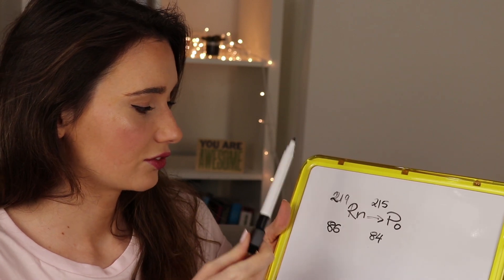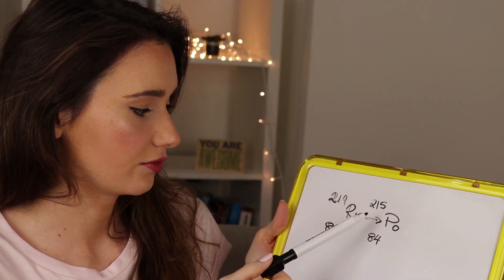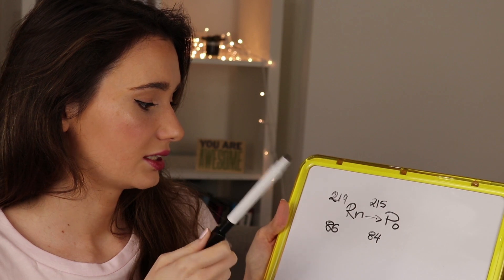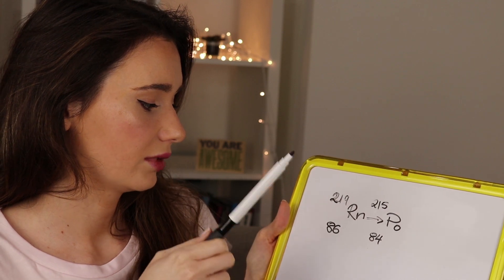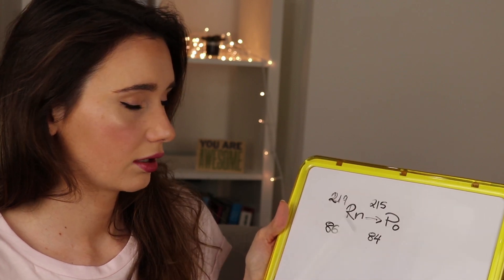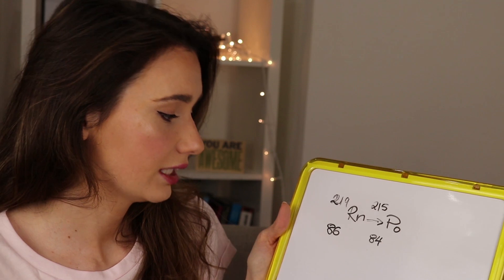Because radon has decayed into polonium, its mass number has changed from 219 to 215, and its atomic number has decreased from 86 to 84.